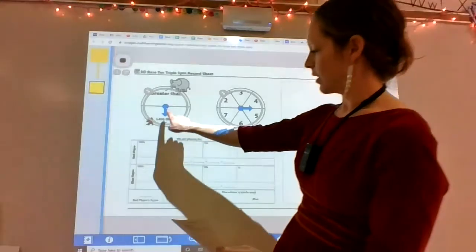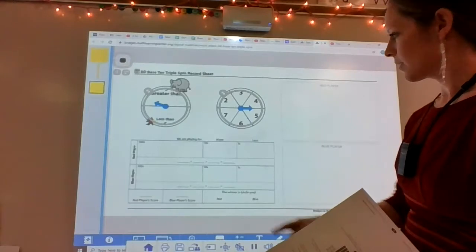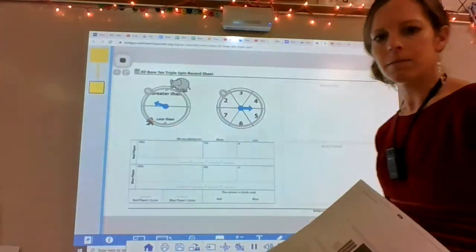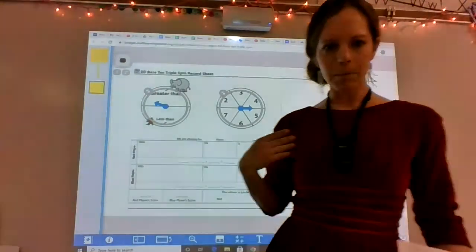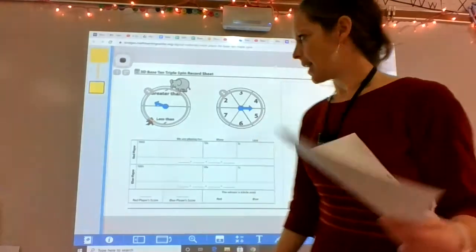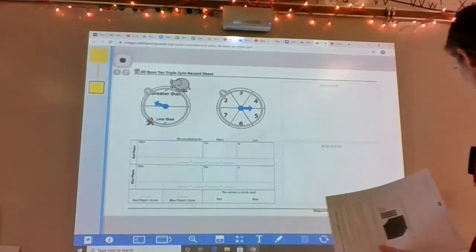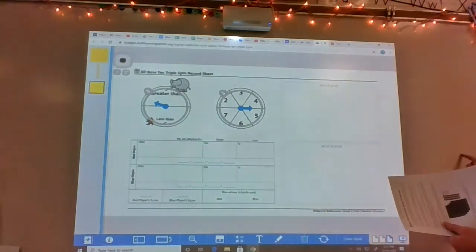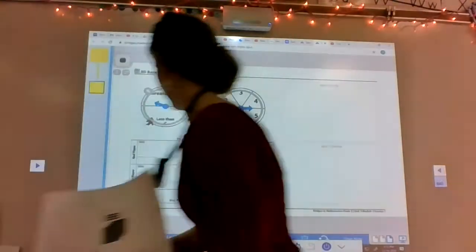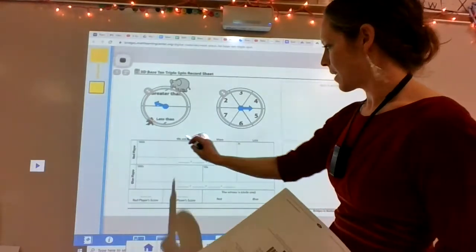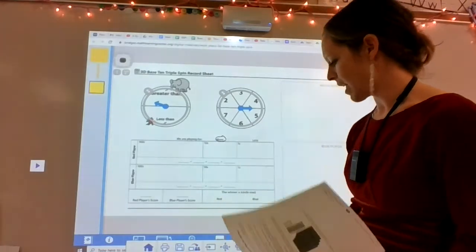One player spins the greater than or less than to see what they are playing for. Okay, there is a red player and a blue player. Here is red player's space and blue player's space. I will be the red player since I am wearing my red fancy dress today. So I spun greater than. So I am going to also mark on here, sorry, that we are playing for more. I want mine to be more than.